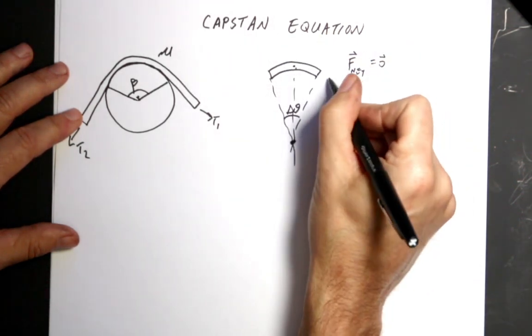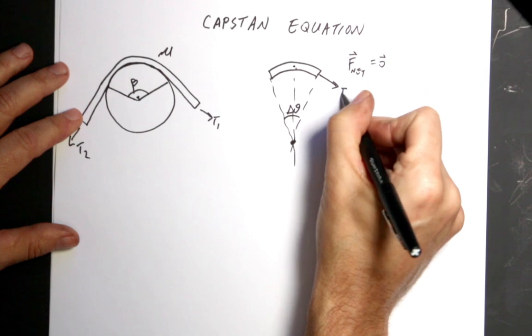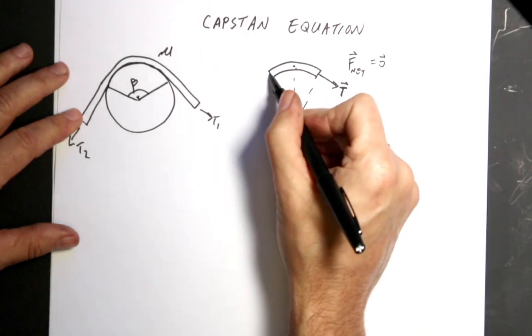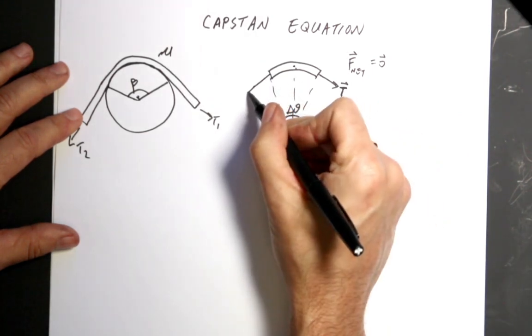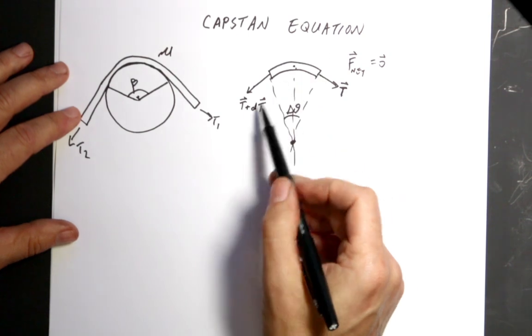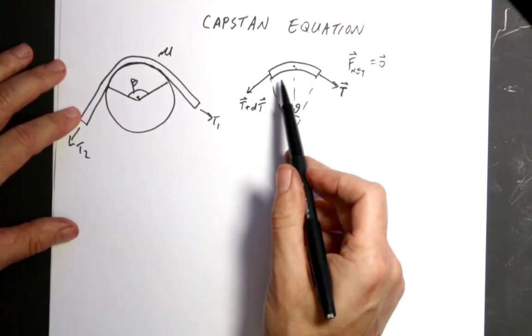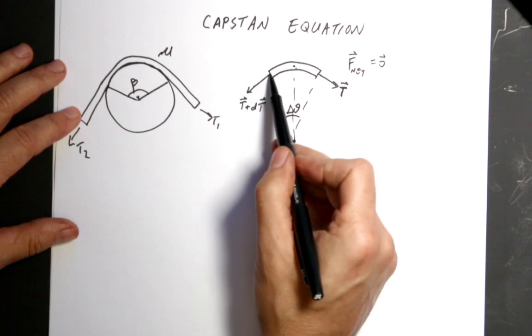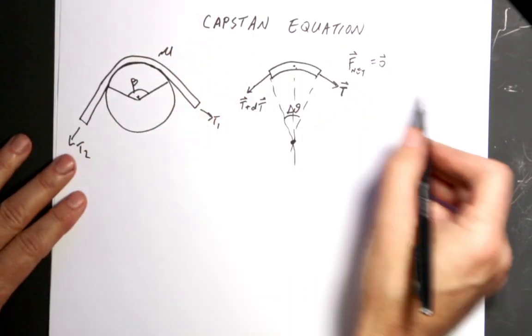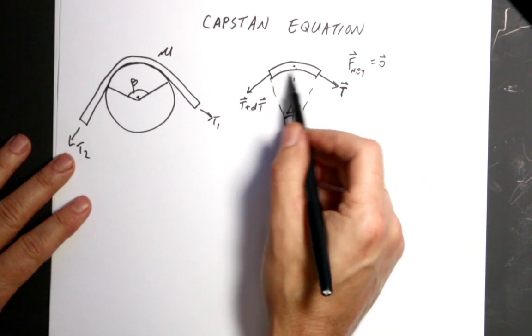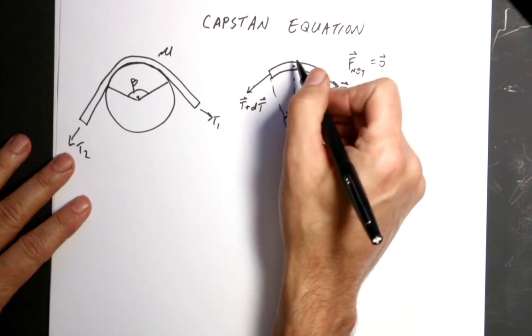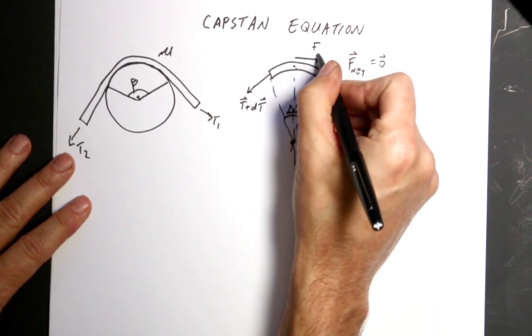But it's a massless string with the coefficient of friction of mu. So there's really four forces acting on this string that's in equilibrium. So these four forces have to add up to zero. So I know that F net equals zero because it's in equilibrium. So the first force I have is T1.